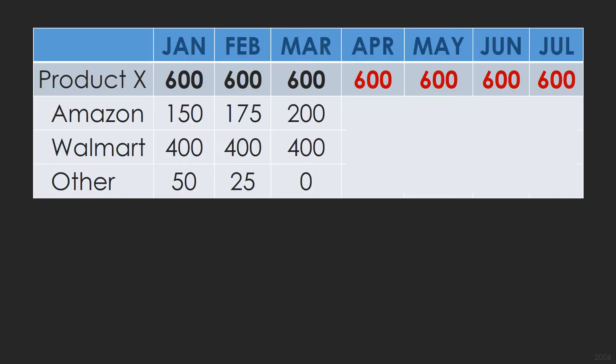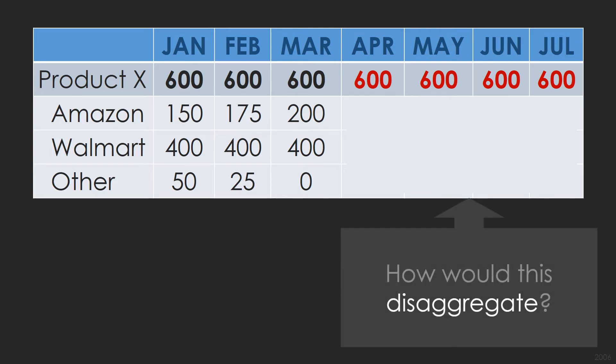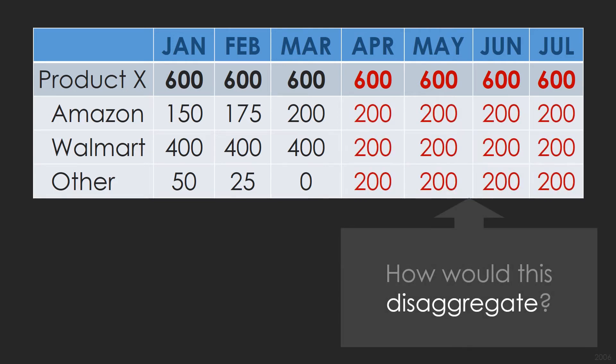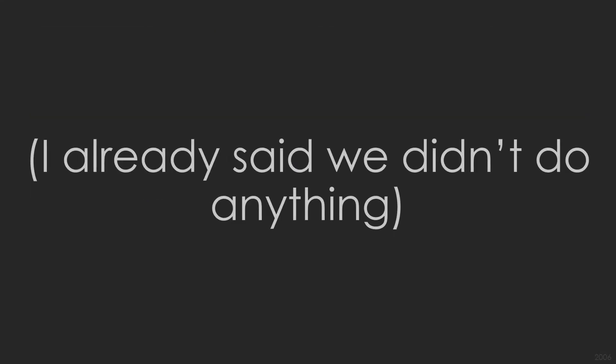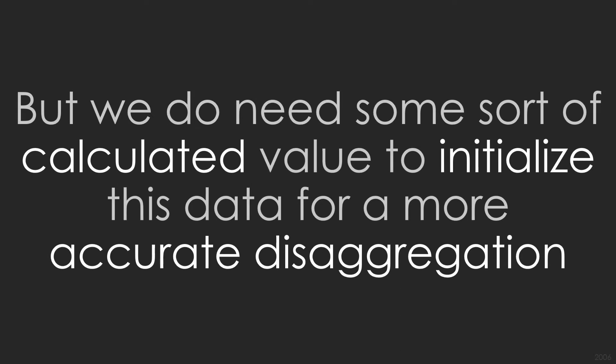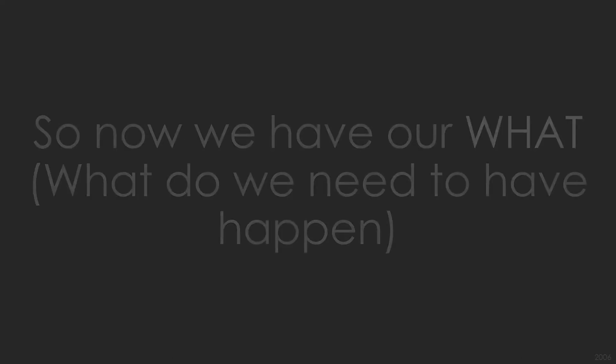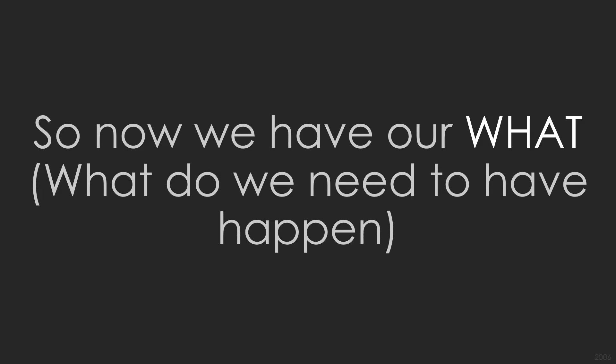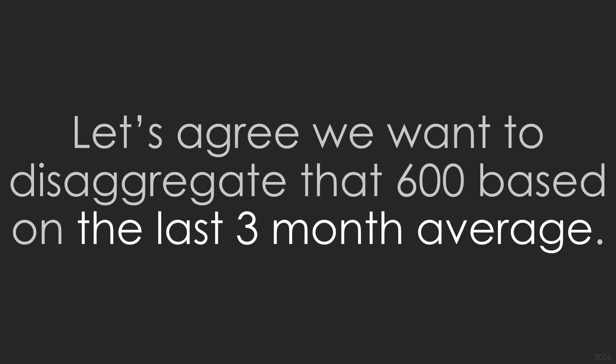So back to our original problem. If we do nothing else, how would this disaggregate? We do need some sort of calculated value to initialize this data for a more accurate disaggregation. So now we have our what — what do we need to have happen? Specifically, let's agree we want to disaggregate that 600 based on the last three month average.